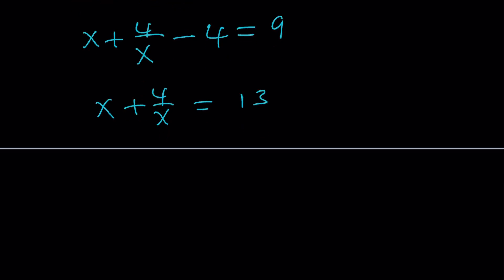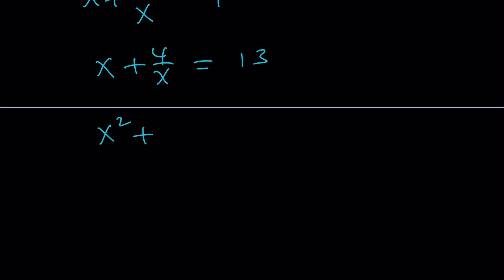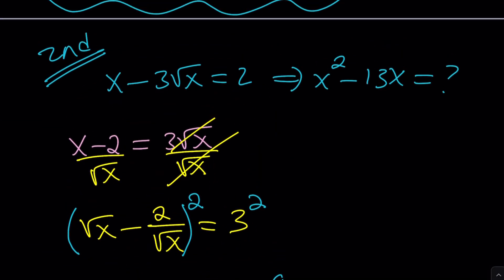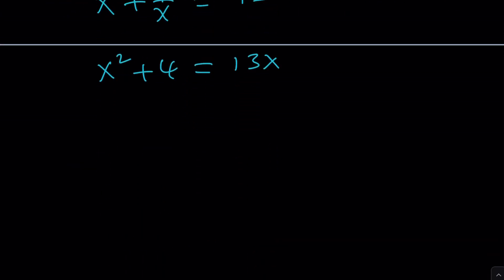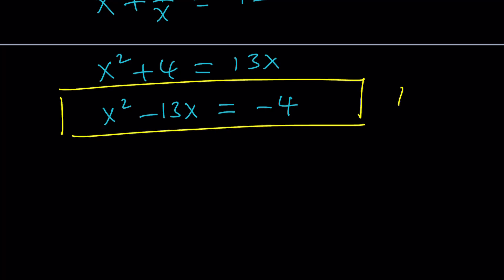And multiply everything by x, you're going to get x squared plus 4 equals 13x. And then remember what we were looking for, x squared minus 13x. Isn't that great? It just came up, right? Well, bring the 13x here and put the 4 on the right-hand side, and you'll get the answer. So this is how this problem was made.